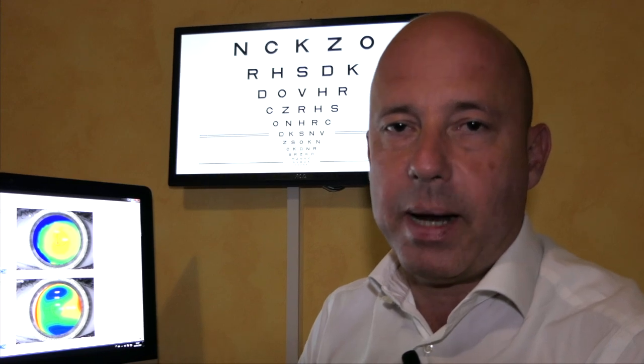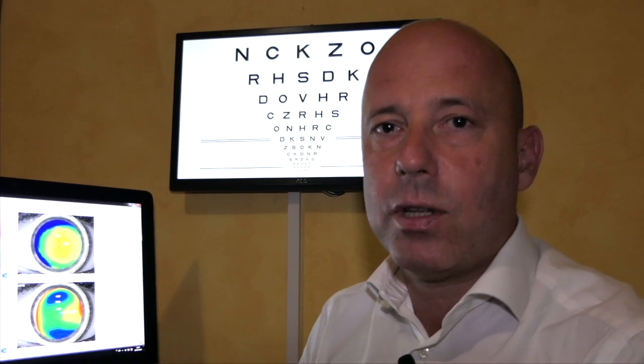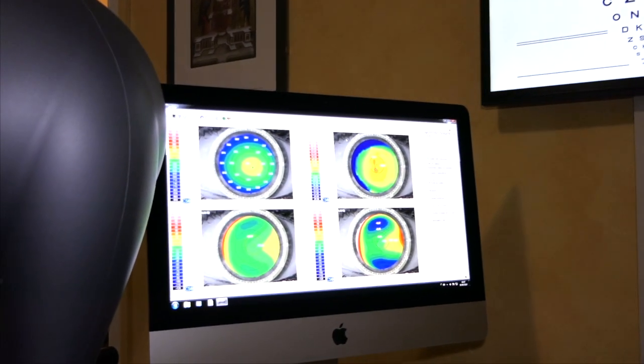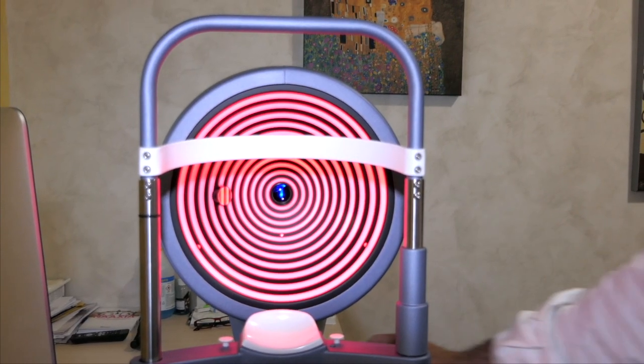The corneal topographer is a machine that manages to encode everything that is transparent. It practically gives us information on the most anterior part of the eye. This is the part we can measure with an instrument equipped with cameras such as the topographer.